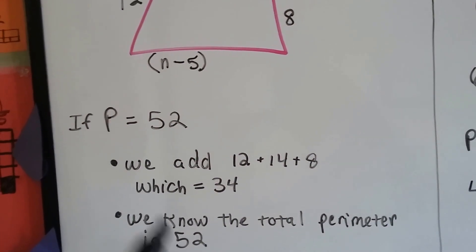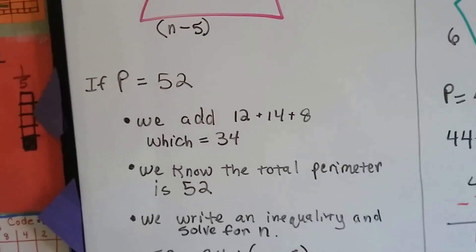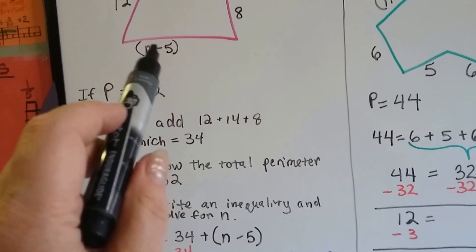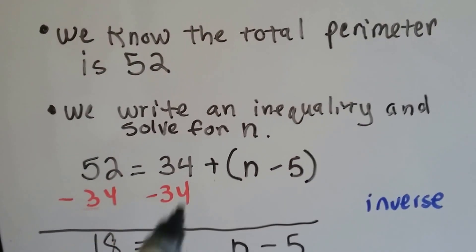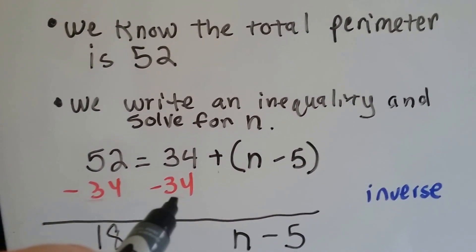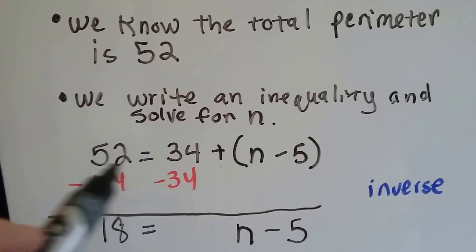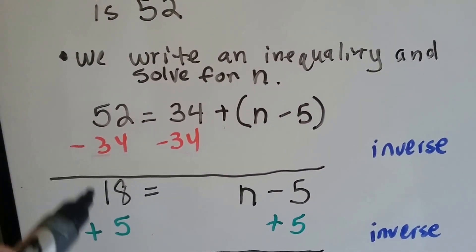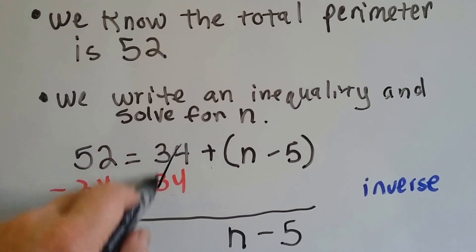We know that the perimeter is 52, so now we can write our equation and solve for n. We write: 52 is equal to 34 plus the quantity n minus 5. We're going to use the inverse operation to solve for n and get it by itself. The inverse operation of addition is subtraction, so because this is a positive 34, we're going to subtract 34 from each side of the equal sign. 52 minus 34 is 18, and the plus 34 and minus 34 made zero pairs, so these are gone.